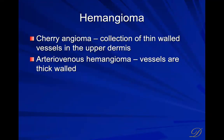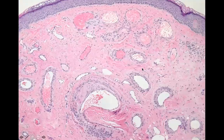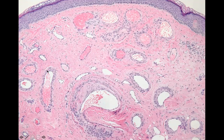Hemangioma means benign proliferation of blood vessels. A cherry angioma is a collection of thin-walled blood vessels in the upper dermis. An arteriovenous hemangioma has more thick-walled vessels mixed in. Cavernous hemangiomas have larger blood vessels going deeper — the deeper the vessel, the more you see it as blue clinically rather than red.